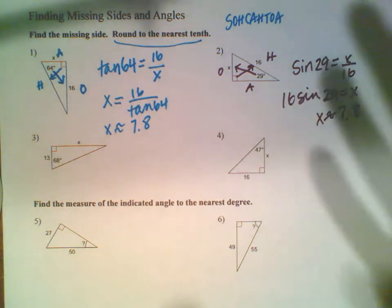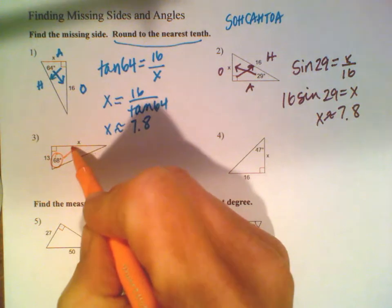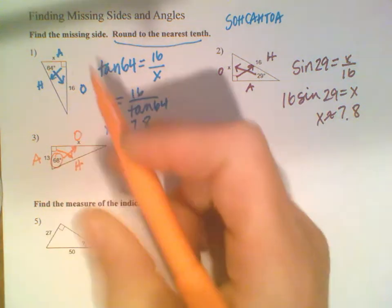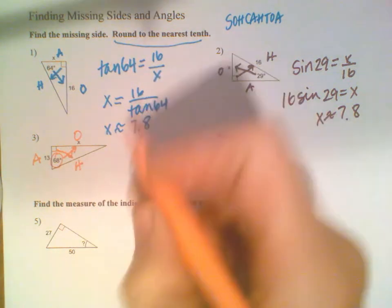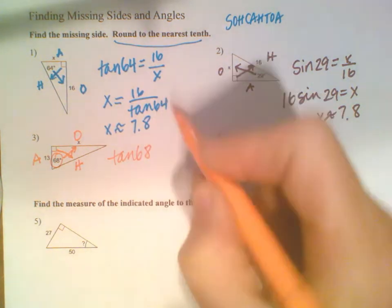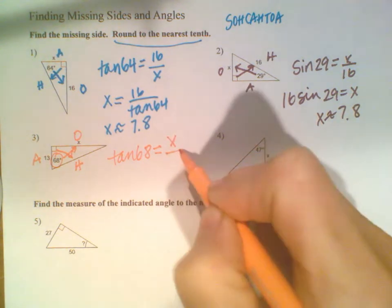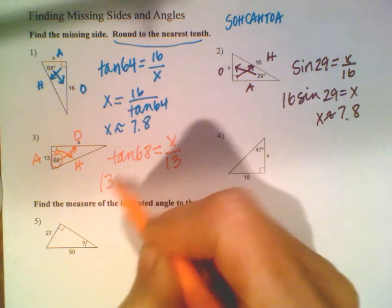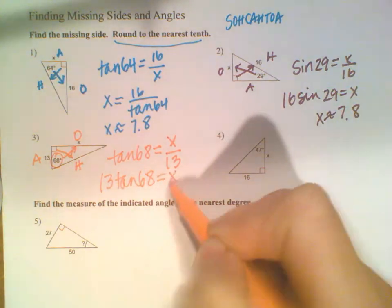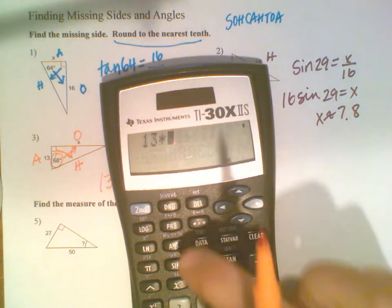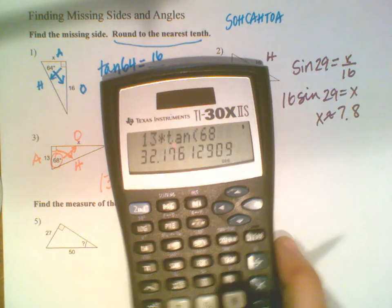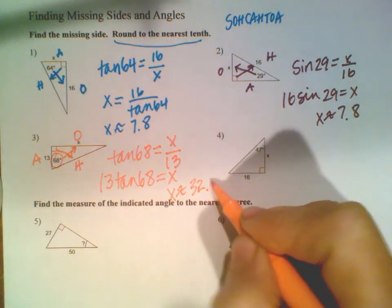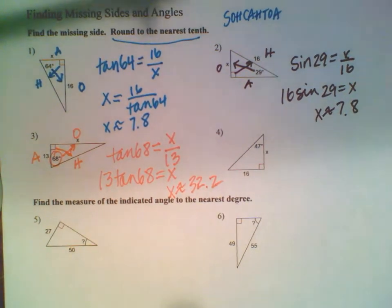I find my angle, go across - that's opposite; across from the right angle - hypotenuse; the remaining side is adjacent. I have opposite and adjacent, so this one is tangent. Tangent of 68 equals the opposite over the adjacent. The variable's on top so I multiply. I do 13 times the tangent of 68 to get X. I end up with 32.2 ish.